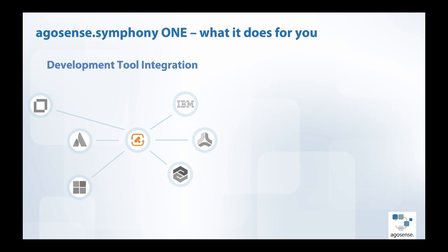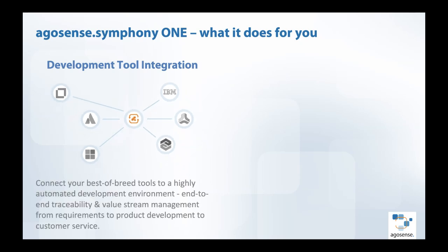We have two main use cases for the system. The first use case is development tool integration: integrating all your different internal development tools from different vendors like IBM, PTC Polarion, Siemens Polarion, Micro Focus, and others. This really connects your best-of-breed toolchain into a highly integrated end-to-end system where you have complete traceability and value stream management for your overall system.